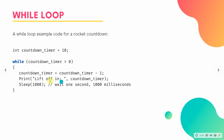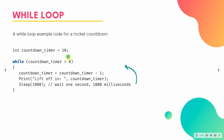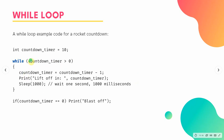It's crucial to include the line that changes the variable inside the loop. If you don't, you'll end up with an infinite loop that always evaluates to true, which will freeze your program. The loop keeps repeating until the expression evaluates to false. Once countdown_timer reaches zero, the loop exits and we print 'Blast off' to complete the program.